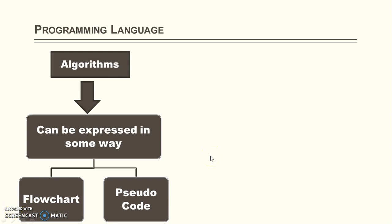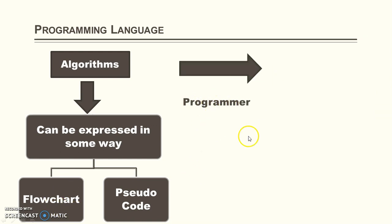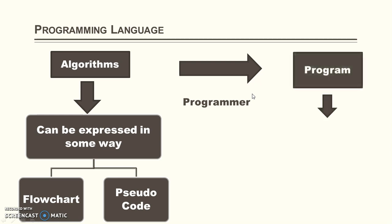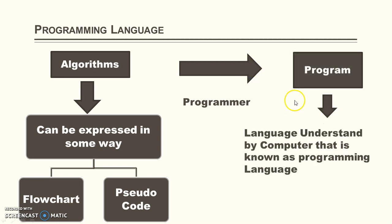From a programming point of view, a program can be represented in any way as a flowchart or pseudocode. A programmer is an essential person that will translate the algorithm or steps expressed in an informal way into steps that can be understood by a computer — that is known as a program. The language that can be understood by a computer is known as the programming language.